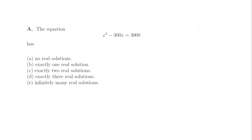1a. The left-hand side of this equation is a cubic and its turning points are at x equals plus and minus 10. The value on the right-hand side is bigger than the value at the turning points, so there's exactly one solution, and the answer is b.